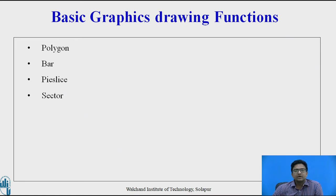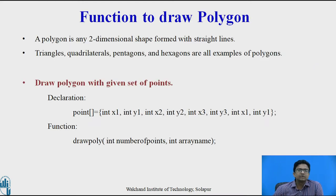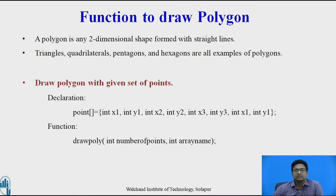In this lecture, we are going to see how to draw polygon, bar, pie slice, and sector. The polygon is any two-dimensional shape formed with straight lines. Rectangle, quadrilateral, pentagon, and hexagon are examples of polygons. With a given set of points, we need to draw the polygon.